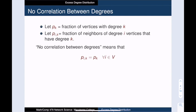We let p_ik denote the fraction of degree k neighbors of vertices with degree i. The phrase no correlation between degrees means that p_ik is equal to p_k. In other words, knowing the degree of the current vertex doesn't give me any information about the degree of its neighbors.